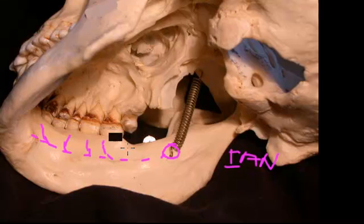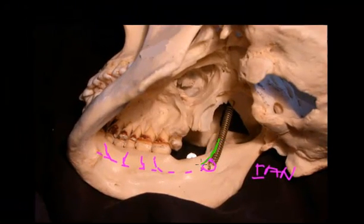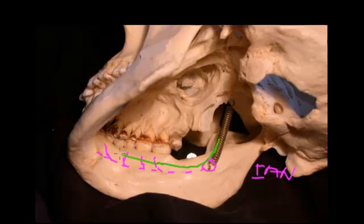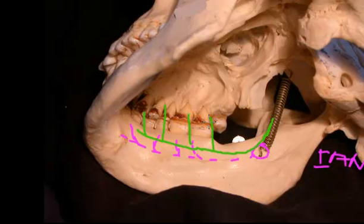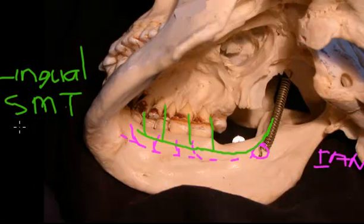Running just next to the inferior alveolar nerve but on the outside of the mandible — leaning on the bone and spreading out all the way across into the tongue — is another nerve called the lingual nerve. The lingual nerve supplies the gingiva, the mucosa, the tongue (anterior two-thirds), and the floor of the mouth, from all the way from tooth eight right through to tooth one.